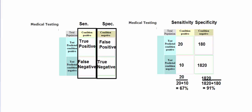In a previous video we discussed sensitivity and specificity. In the previous example we had 20 true positives — people that had the condition and tested positive — 180 false positives who tested positive but didn't actually have the disease, 10 false negatives, and 1,820 true negatives who tested negative and didn't have the disease. That gave us a sensitivity of 68%, a little low, and a specificity of 91%.